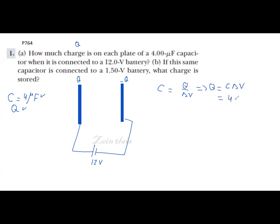Equals to 4 times 10 to the minus 6 farad times delta v which is equal to 12 volt. The answer will be 4.8 times 10 to the power minus 5 coulomb, or you can say 48 times 10 minus 6 coulomb, 48 micro coulomb.